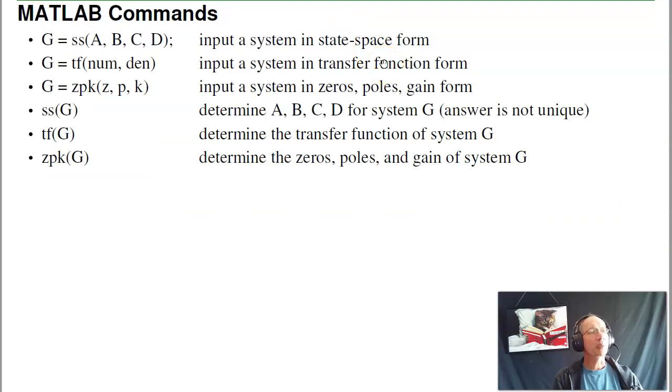A couple commands we're going to be using. I can input the system in MATLAB in state space form, SS, where you specify the matrices A, B, C, and D. The previous forms we were using, transfer function and zero poles K, are two other ways to input a system. Once you get the system in MATLAB, I can flip between all these any way I like.